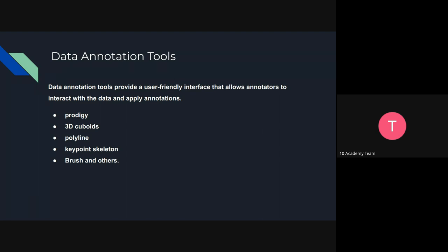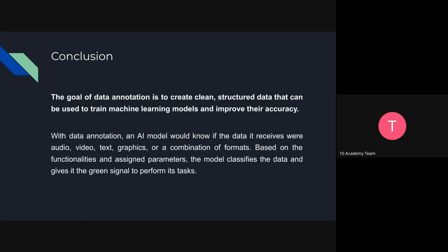There are tools that can help with annotation. These tools provide a user interface that allows annotators to interact with the data and apply annotations. Prodigy, for example, is used for text annotation. Tools like 3D Viewpoints and others help with image and video annotation. The tools are used for different purposes, so you can check them out.